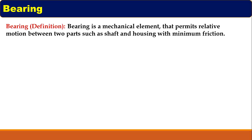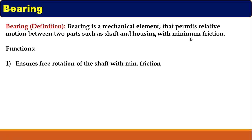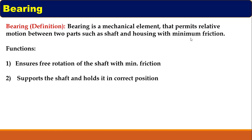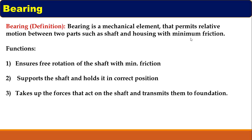First we will see the definition of bearing. A bearing is a mechanical element that permits relative motion between two parts such as shaft and housing with minimum friction. Functions of bearing: first, ensures free rotation of the shaft with minimum friction; second, to support the shaft and holds it in correct position; third, takes up the forces that act on the shaft and transmits them to the foundation.